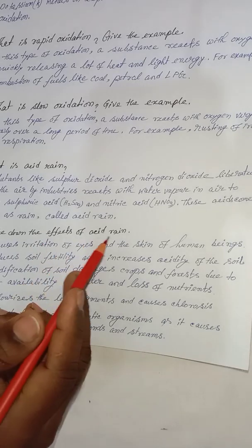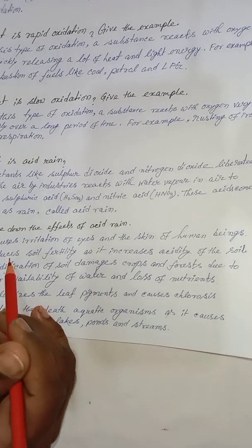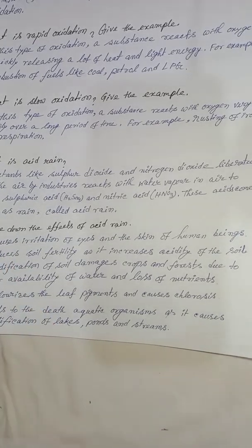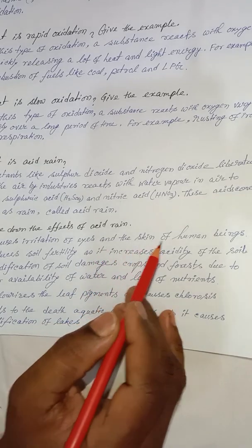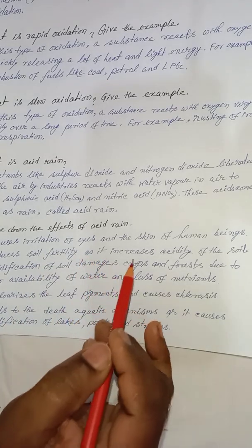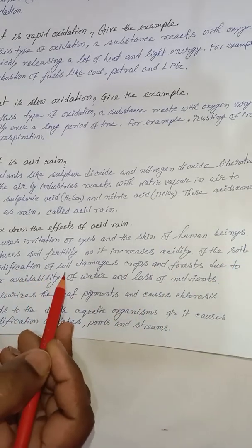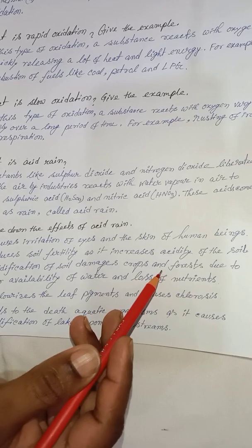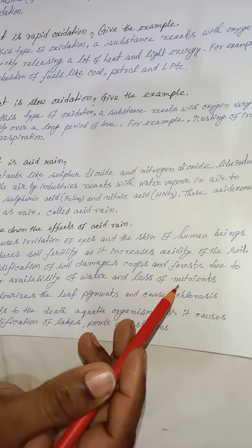Write down the effects of acid rain. First, it causes irritation of the eyes and skin of human beings. Next, it reduces soil fertility as it increases the acidity of the soil. Acidification of the soil damages crops and forests due to poor availability of water and loss of nutrients.